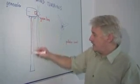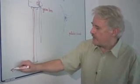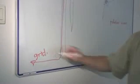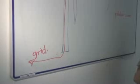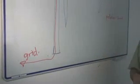This electricity then is fed down the tower and out to the electricity grid where it can supplement electricity produced in other ways.